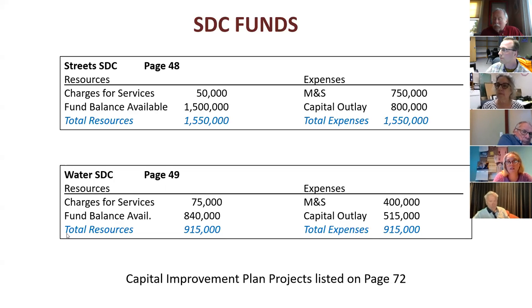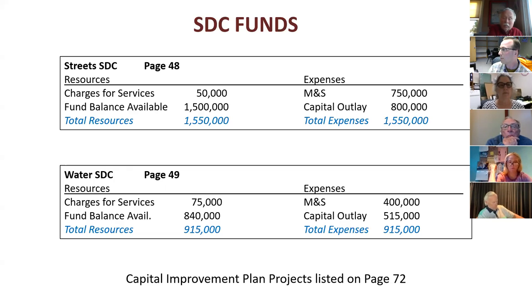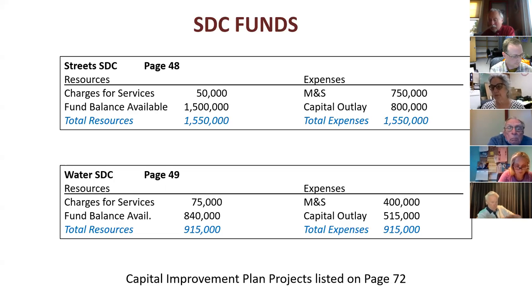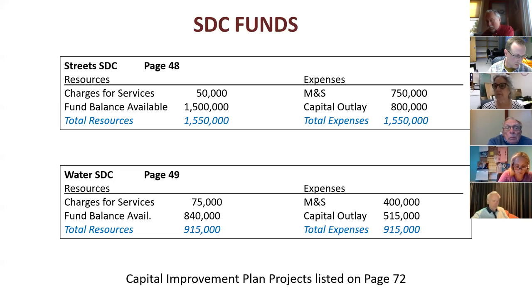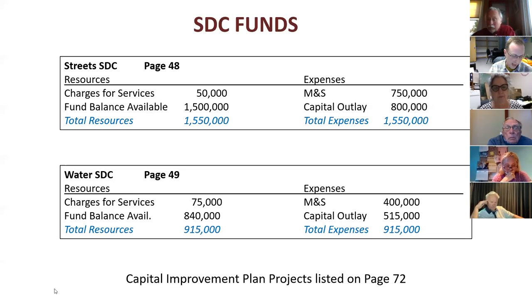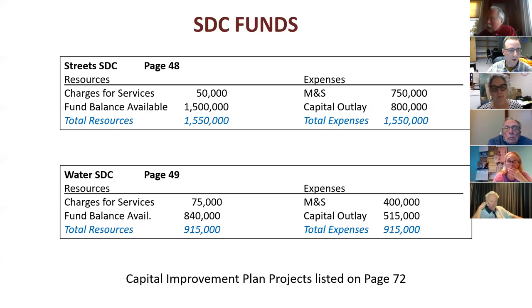There's a pretty big contingency left in here. Usually every year we roll over almost all of it. This upcoming year is when we are actually starting to use it. Moving to the next system development charge fund: Water SDC. Same idea here — we appropriate to spend everything, even though we likely won't spend all of the $915,000. The charges for services are the SDC fees we receive throughout the year from different developments, and the beginning fund balance is what's available.